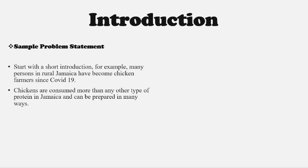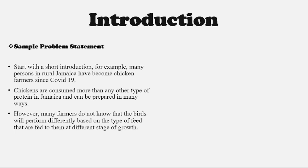Chickens are consumed more than any other type of protein in Jamaica and can be prepared in many ways. You can list some of the ways in which chicken meat can be prepared. However, many farmers do not know that the birds will perform differently based on the type of feed they consume at their different stages of growth. This is a very short problem statement. The next subheading under introduction is the aim.